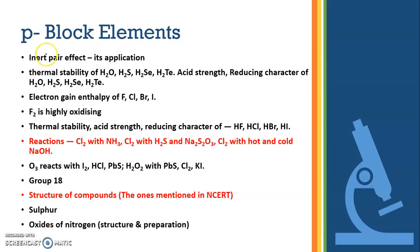From P-Block students, you can see I have written down all the important topics. Inert pair effect, its application, thermal stability of these compounds, acid strength, reducing character, electron gain enthalpy of fluorine, chlorine, bromine, and iodine. All these questions are very, very important for this year. The ones marked in red is super duper important. Please students, cover all these topics under P-Block elements.